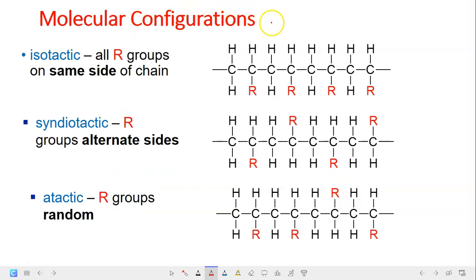Next is molecular configurations. So I'm going to talk about three different configuration here. Here, we have the first one, isotactic, in which all the side chain or the R groups are located on the same side of the chain. Next is syndiotactic, in which the R or the side chain group are located at alternate sides of the chain.